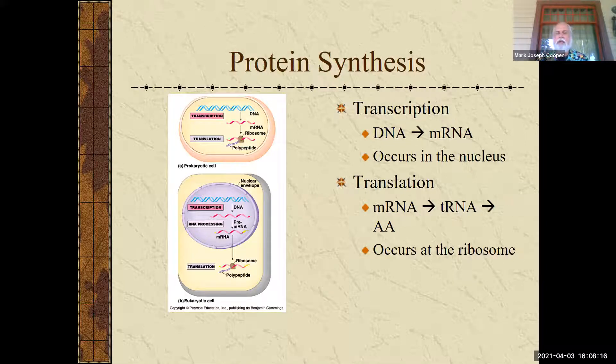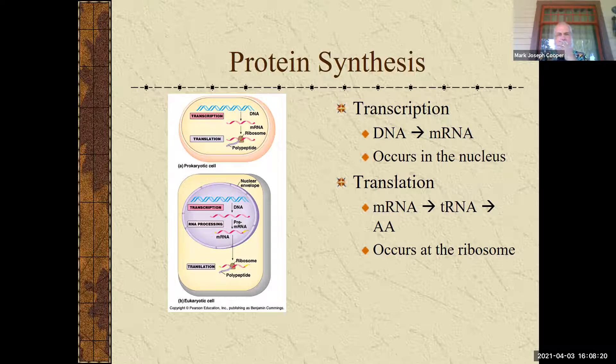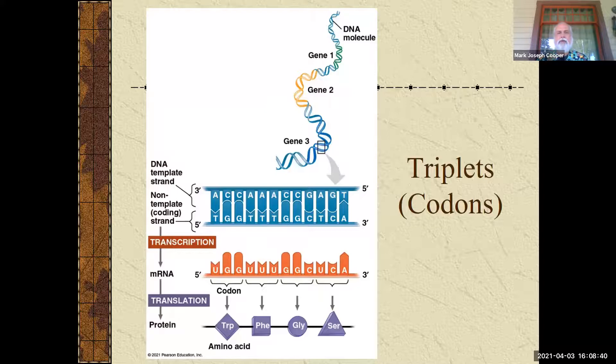Which is then going to bring in the correct amino acids to make our protein. Okay, so again, transcription is happening in the nucleus, translation is happening in the cytosol at the ribosomes. Transcription is going from DNA to messenger RNA, and translation is going to take that messenger RNA, read it with transfer RNA, and then bring in the proper amino acids.